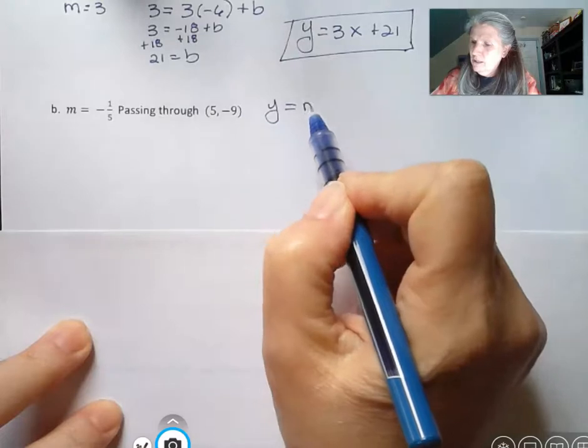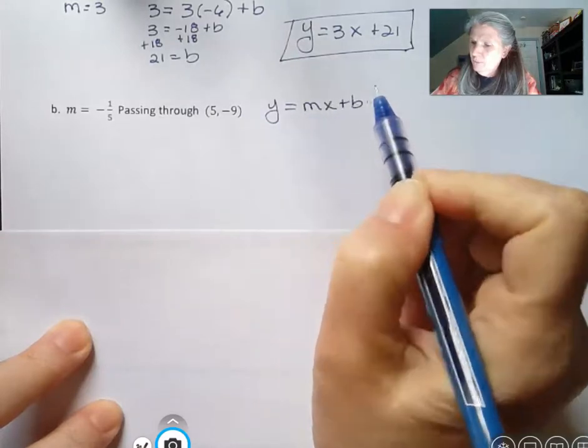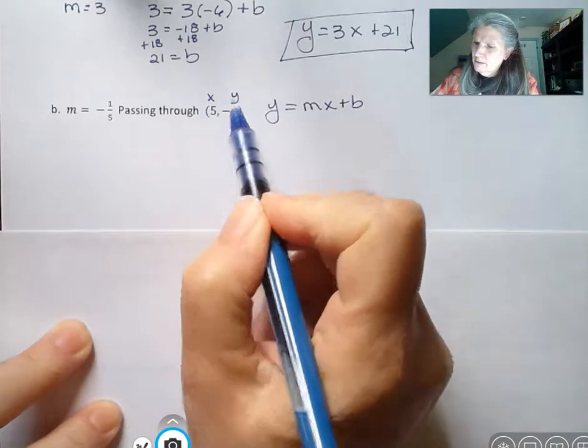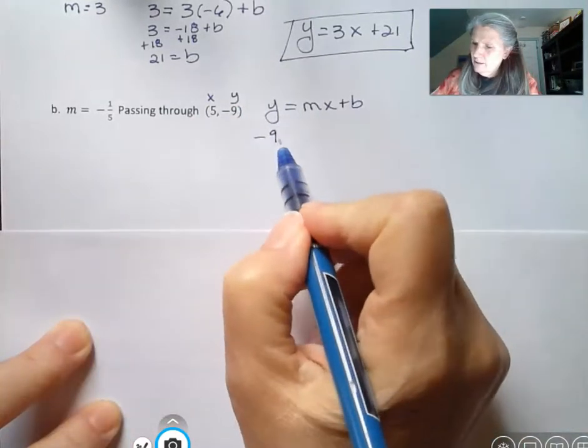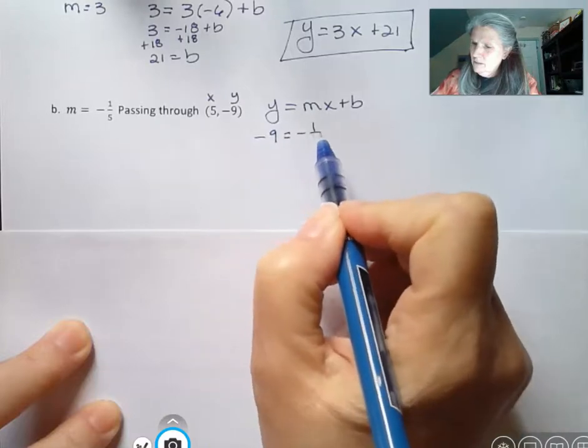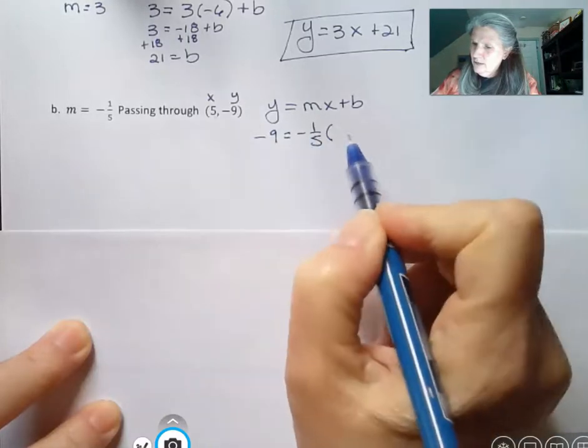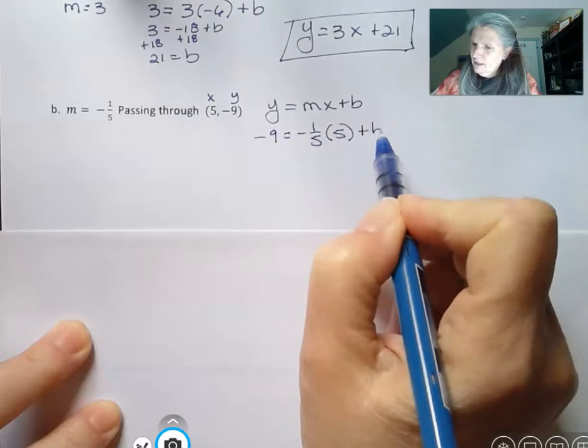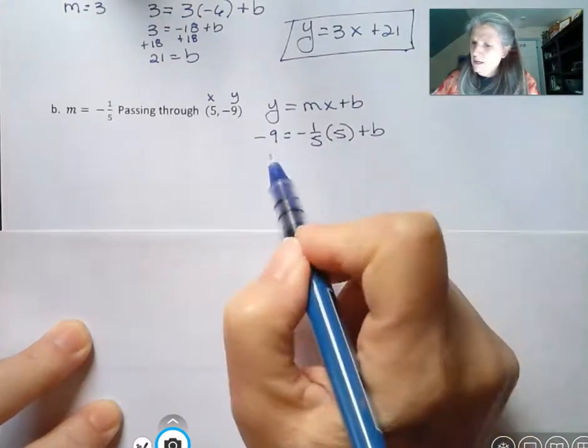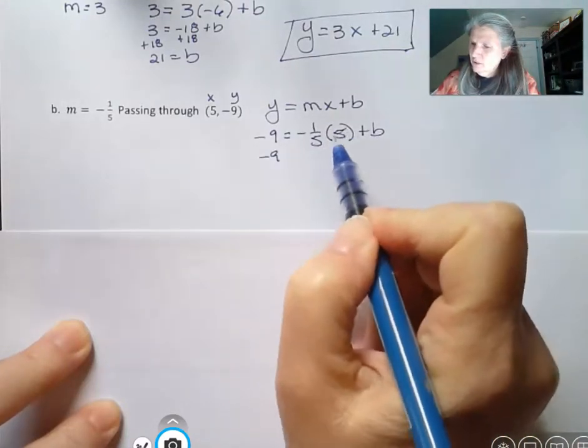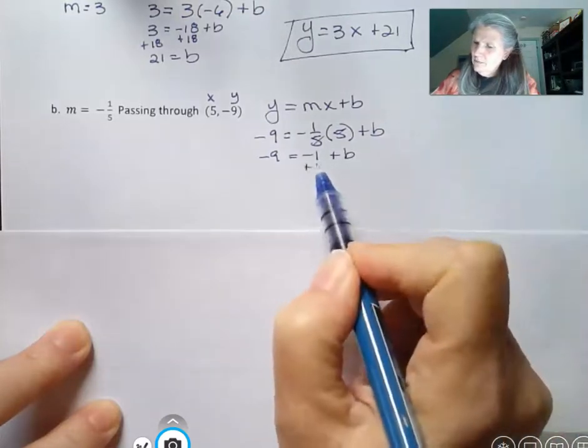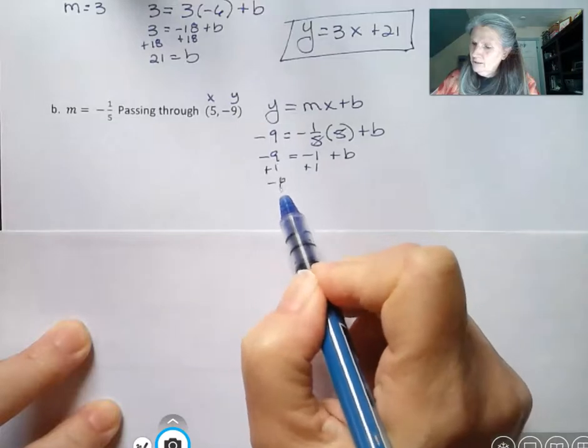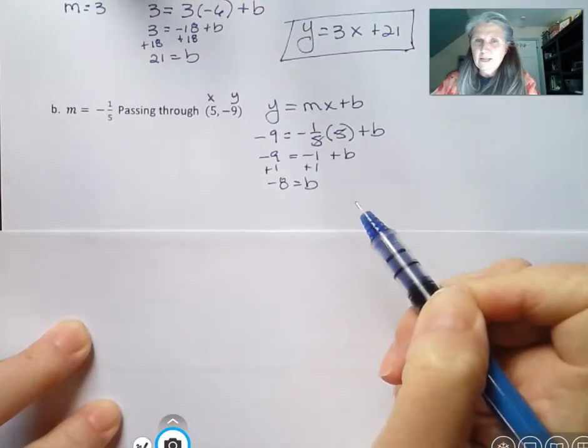I know that this is my x and y, and they give me the m, so y is negative 9, m is negative 1 fifth, x is 5, and I'm going to find b by multiplying these two things. That gives me negative 1, plus b, and then add 1 to both sides, and that gives me b is negative 8.